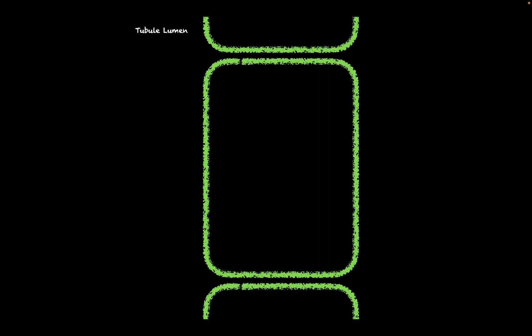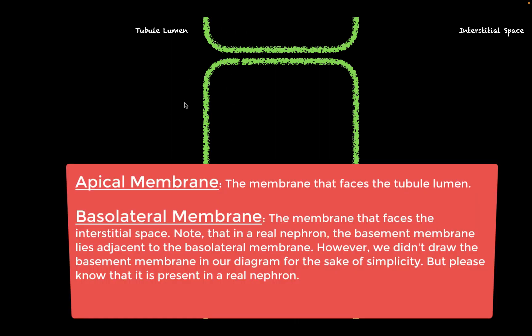Before we talk about how sodium chloride is reabsorbed in the loop of Henle, let's bring up the diagram we're going to be using today. The first part of our diagram is the epithelial cells that make up the tubule lining. These epithelial cells divide two compartments: the tubule lumen, which is present inside the nephron, and the interstitial space, which is present outside the nephron. The membrane facing the tubule lumen is called the apical membrane, and the membrane facing the interstitial space is called the basolateral membrane.